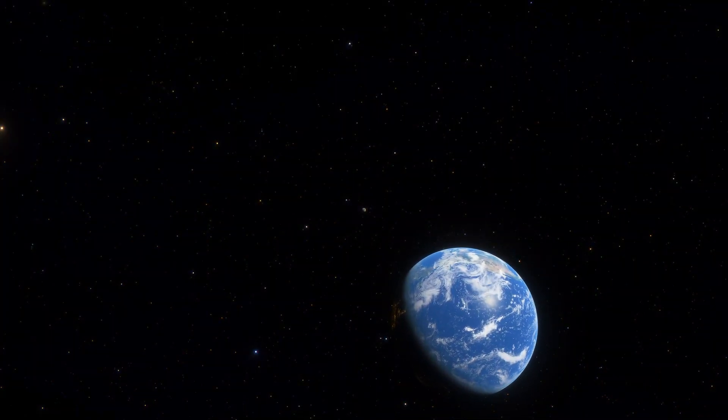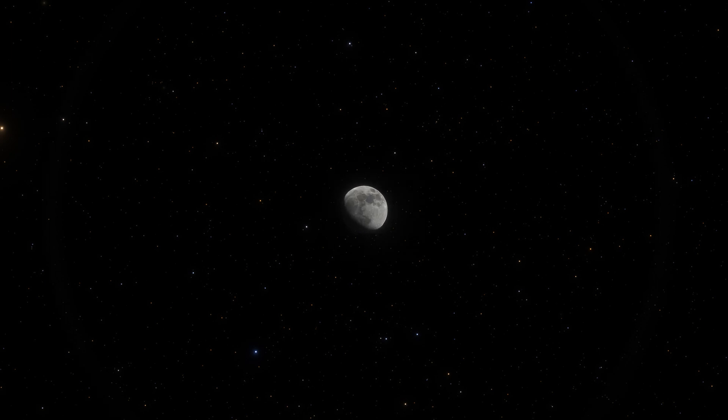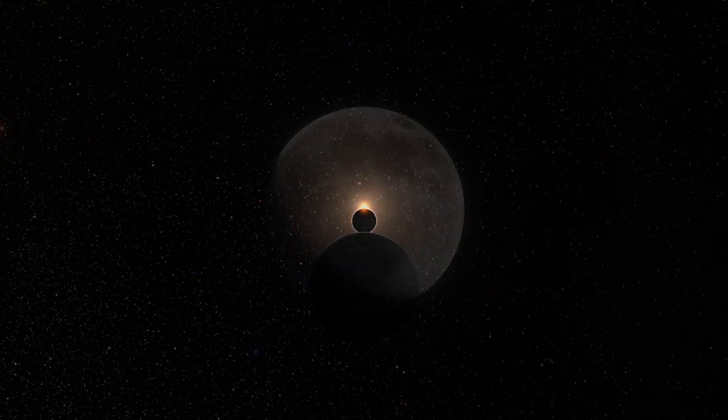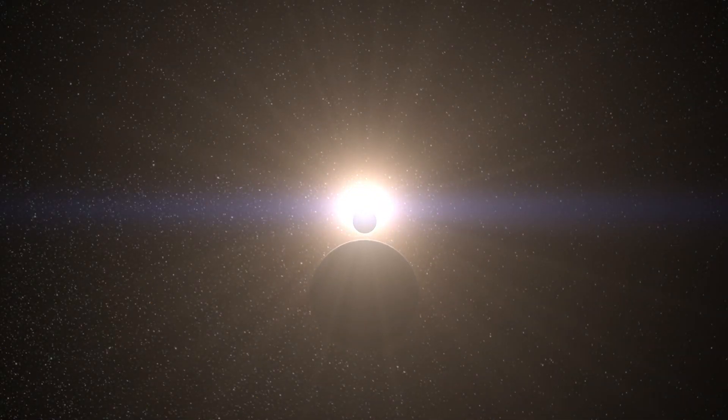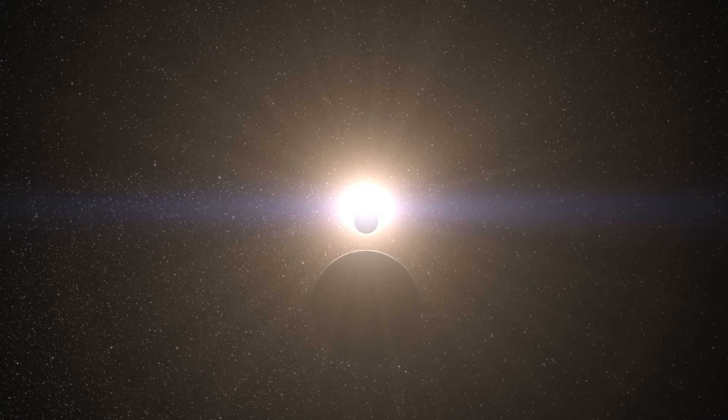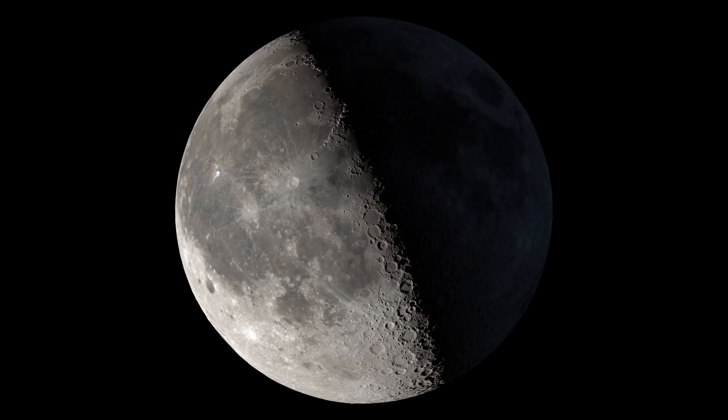Of course, the Earth-Moon system should not be considered an ideal example of a two-body problem either, as the orbit of our satellite is significantly influenced by the Sun's gravity. Our star causes the Moon to periodically move closer to and farther away from Earth, essentially altering the eccentricity of the satellite's orbit. At certain points, the orbit becomes more elongated, or conversely, more circular.